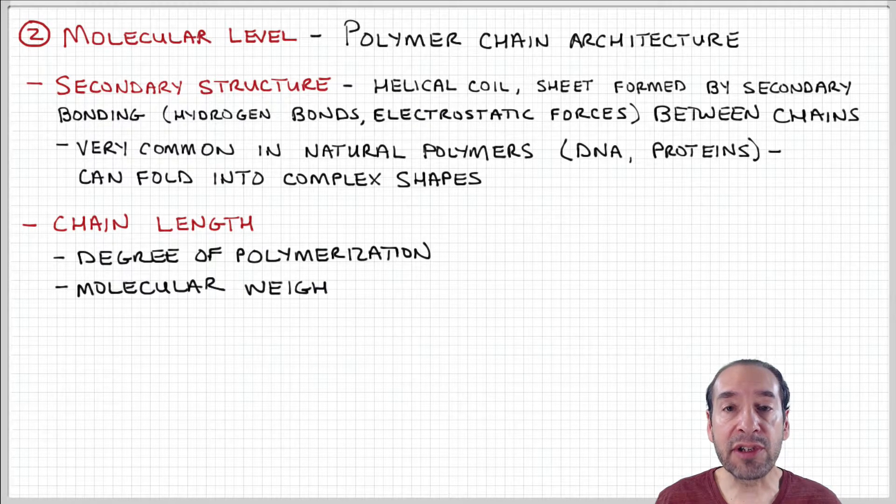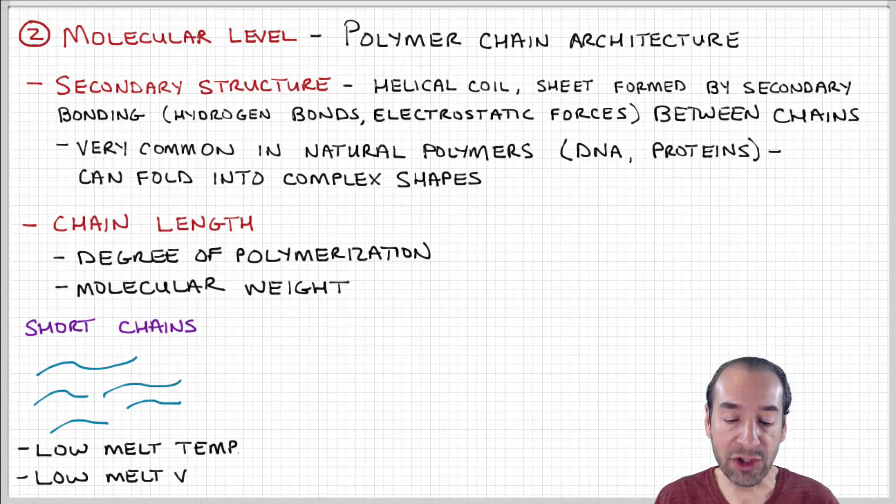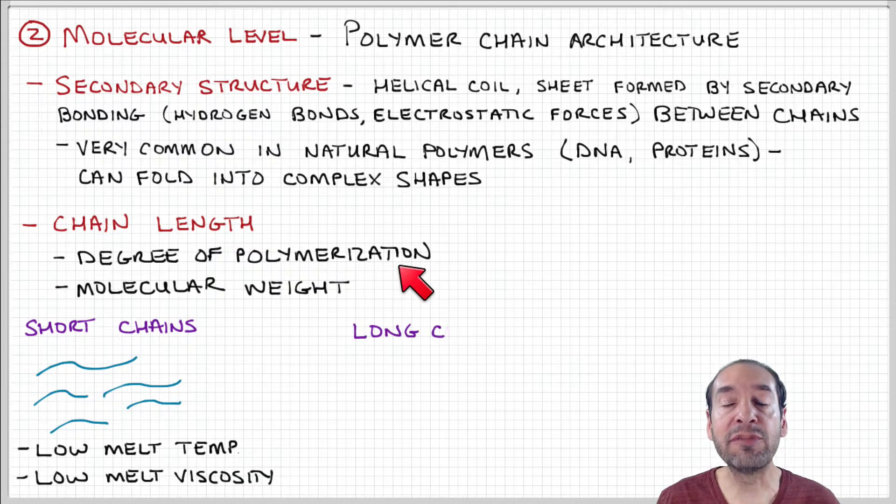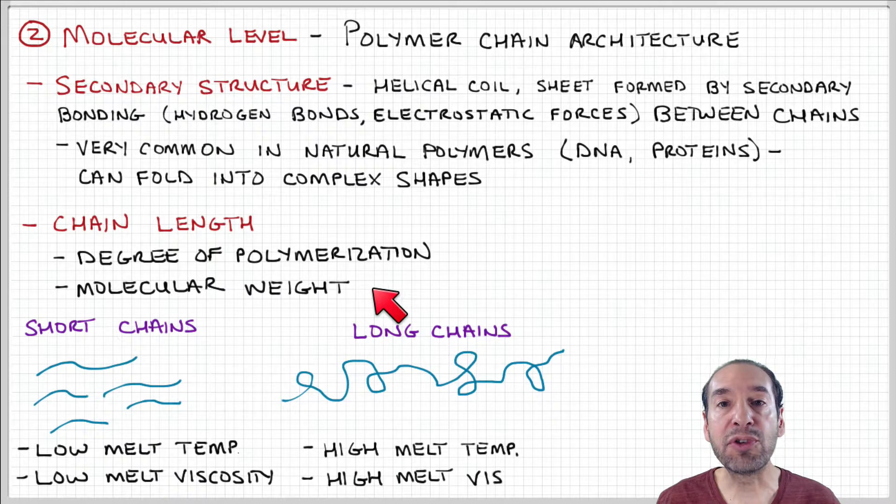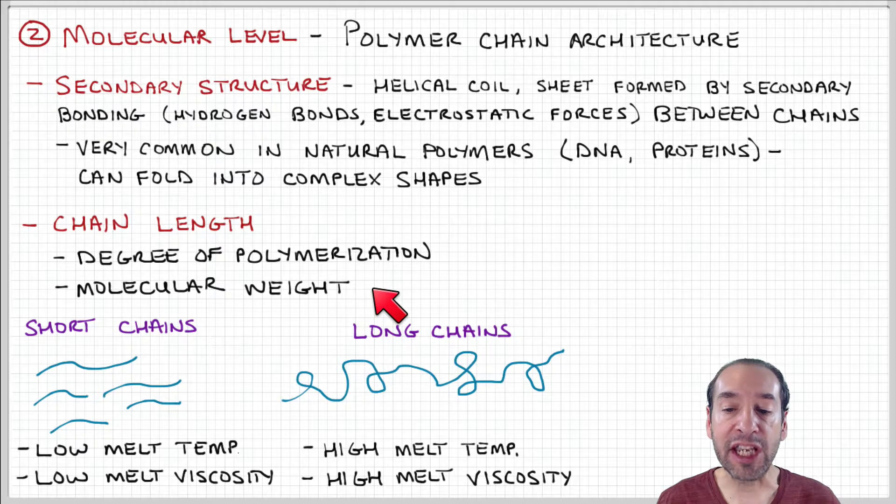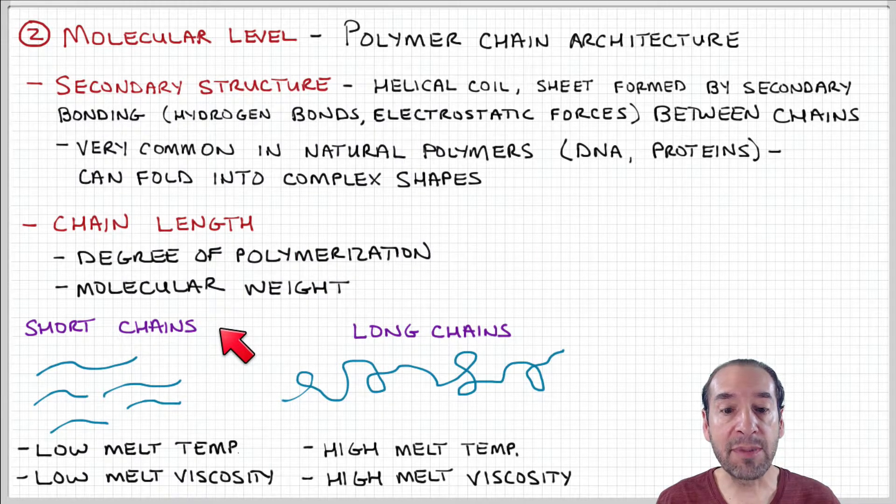Chain length is another attribute related to the molecular level structure. We talked about different ways to express that, both in terms of the degree of polymerization, which is the number of repeat units in the chain, and the molecular weight, which is the total molar mass of all the atoms that compose the polymer chain. The way that chain length can come into play in terms of the properties of the material.